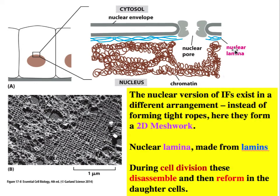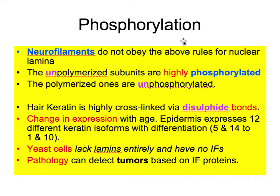The proteins making up the nuclear lamina are called lamins. Phosphorylation and dephosphorylation are the mechanism by which individual intermediate filaments detach from each other. During cell division, they break into smaller segments that dissolve into the background, thereby dissolving the nucleus. Not all intermediate filaments follow these rules — neurofilaments inside nerve cells do not obey the same chemical modifications, but most do.